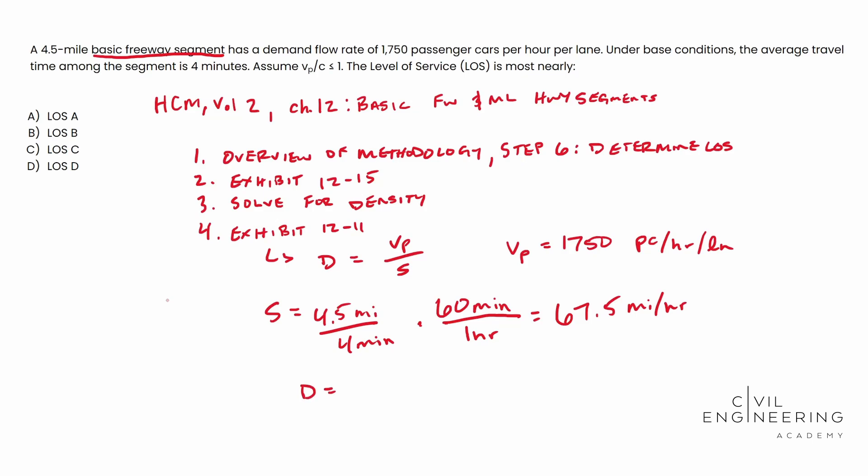And so we end up with density being equal to 1750 passenger cars per hour per lane over our mean speed, which is 67.5 miles per hour. And this dude ends up being 25.93 passenger cars per mile per lane.